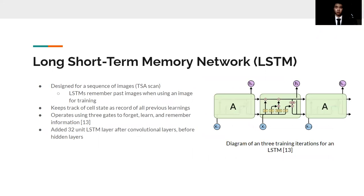The next network that we used was a long short-term memory network, or an LSTM. CNNs analyze each image individually during training, but LSTMs are designed to analyze a sequence of images such as a TSA scan. This means that if the LSTM sees a potential threat in one perspective, it can keep that in mind as it analyzes the rest of the perspectives. LSTMs keep track of a cell state as a record of everything it has already learned, then uses three gates to forget, learn, and remember all the necessary information for proper image classification. For our LSTM, we used a 32-unit LSTM layer after the convolutional layers, but before the hidden layers which were used for classification.